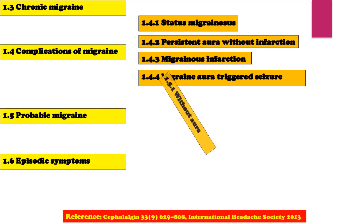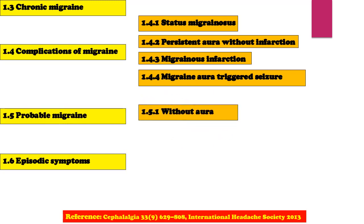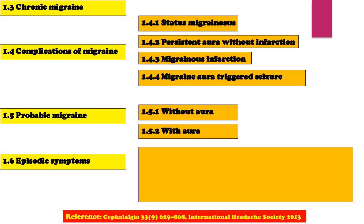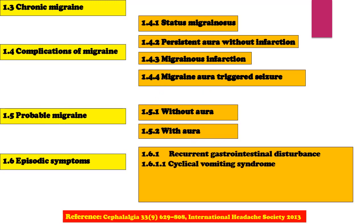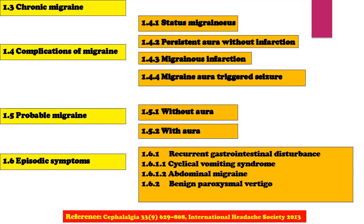Probable Migraine is further classified into Without Aura and With Aura. Episodic Syndromes associated with Migraine are Recurrent Gastrointestinal Disturbance, Cyclical Vomiting Syndrome, Abdominal Migraine, Benign Paroxysmal Vertigo, and Benign Paroxysmal Torticollis.